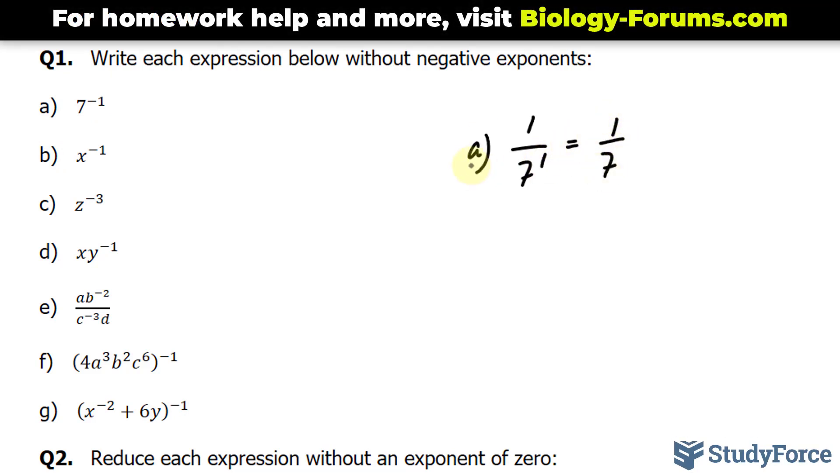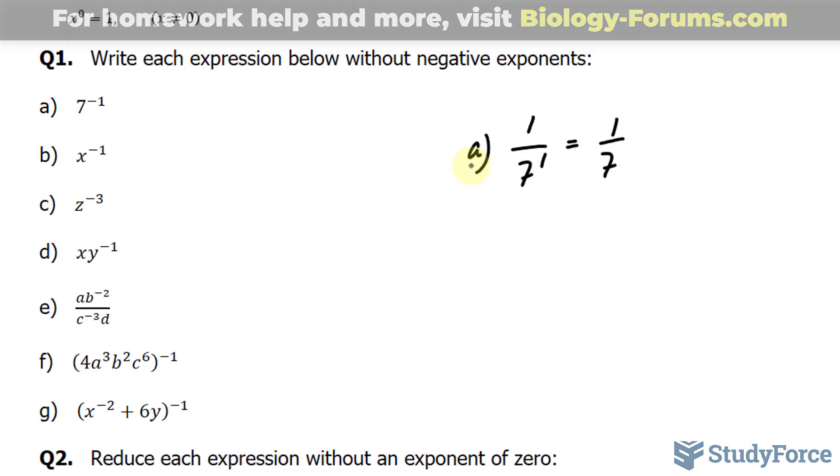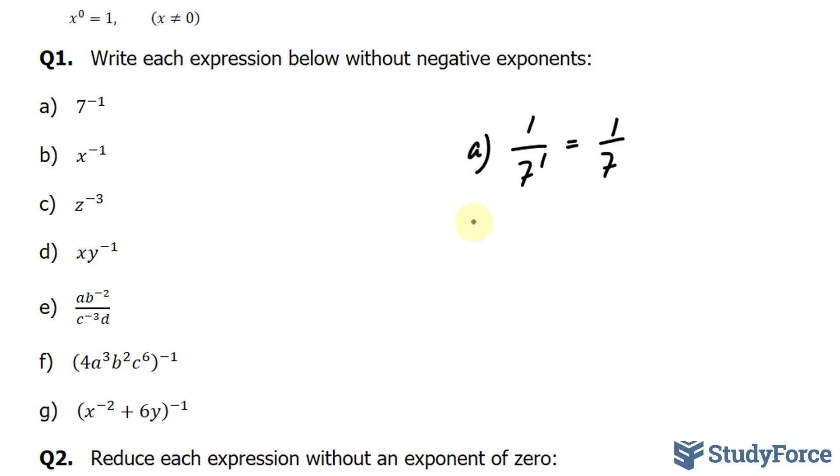In question B, we have x to the power of negative 1. Once again, we'll reciprocate the base, where we have 1 over x, and instead of negative 1, it becomes positive 1.